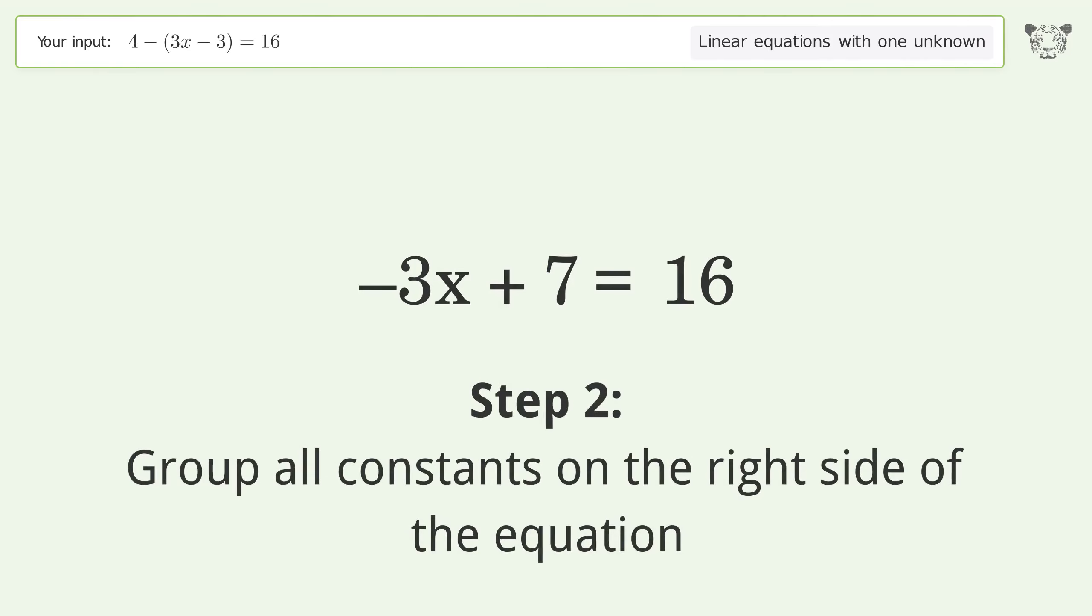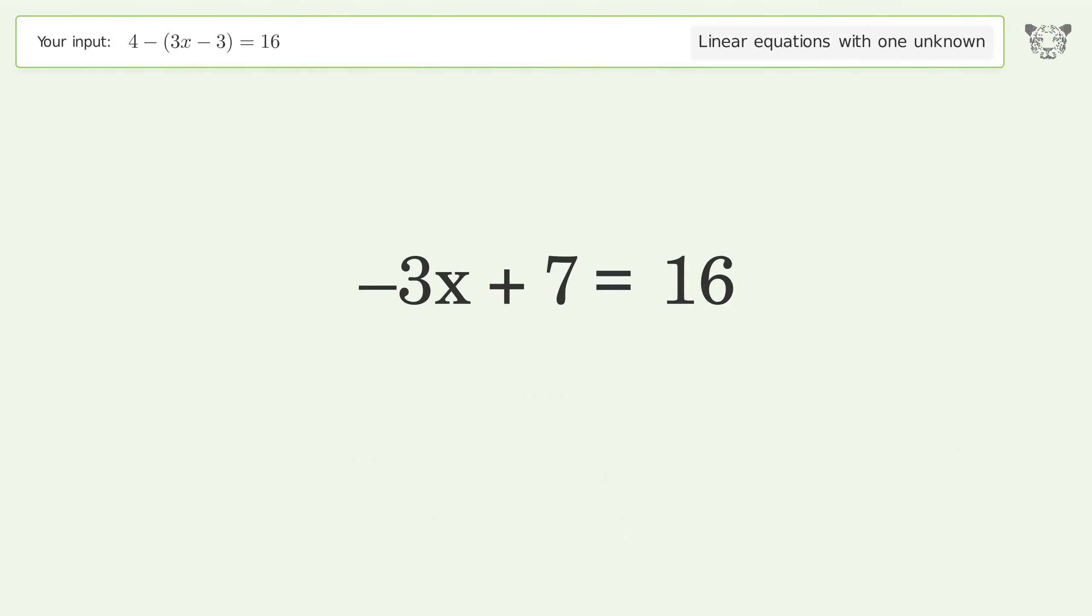Group all constants on the right side of the equation. Subtract 7 from both sides and simplify the arithmetic.